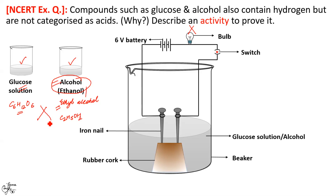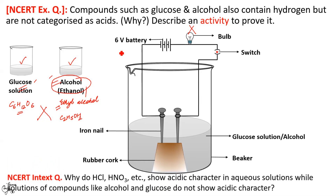The activity suggests that glucose and ethanol solutions do not conduct electric current. The reason is that, unlike acid solutions, both glucose and alcohol do not produce hydrogen ions when dissolved in water. In the absence of ions — which are the charged carriers — the electric current cannot be carried, and hence the bulb does not glow. So it is not necessary that all compounds containing hydrogen are acidic in nature.